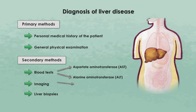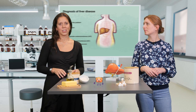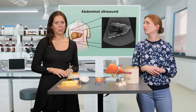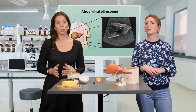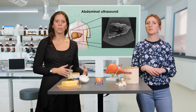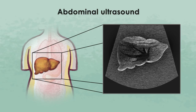The abdominal ultrasound is the first-line imaging test used to evaluate liver disease. Depending on the results, further examination would be recommended, such as a CT scan or an MRI. Ultrasound is a non-invasive technique that uses sound waves to visualize the liver, its blood vessels, and associated structures, for instance the gallbladder.